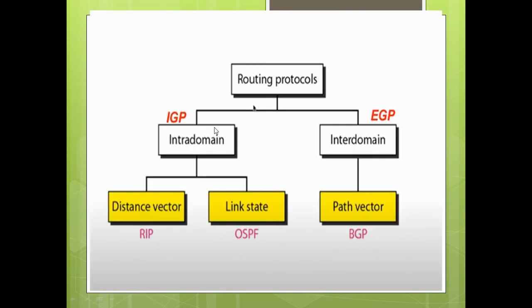So we have the routing protocols classified into intra-domain and inter-domain. We have RIP which is based on distance vector and OSPF which is based on link state. Both are more suitable for intra-domain. Whereas we have the BGP which is based on path vector which is more suitable for inter-domain.